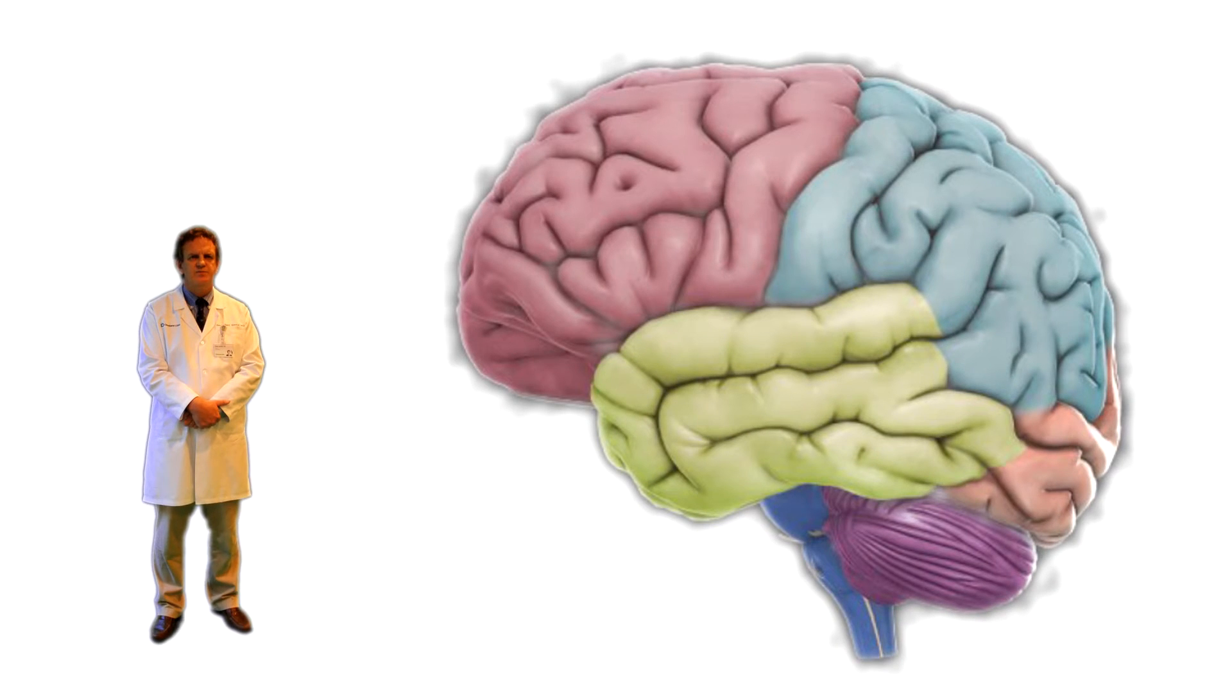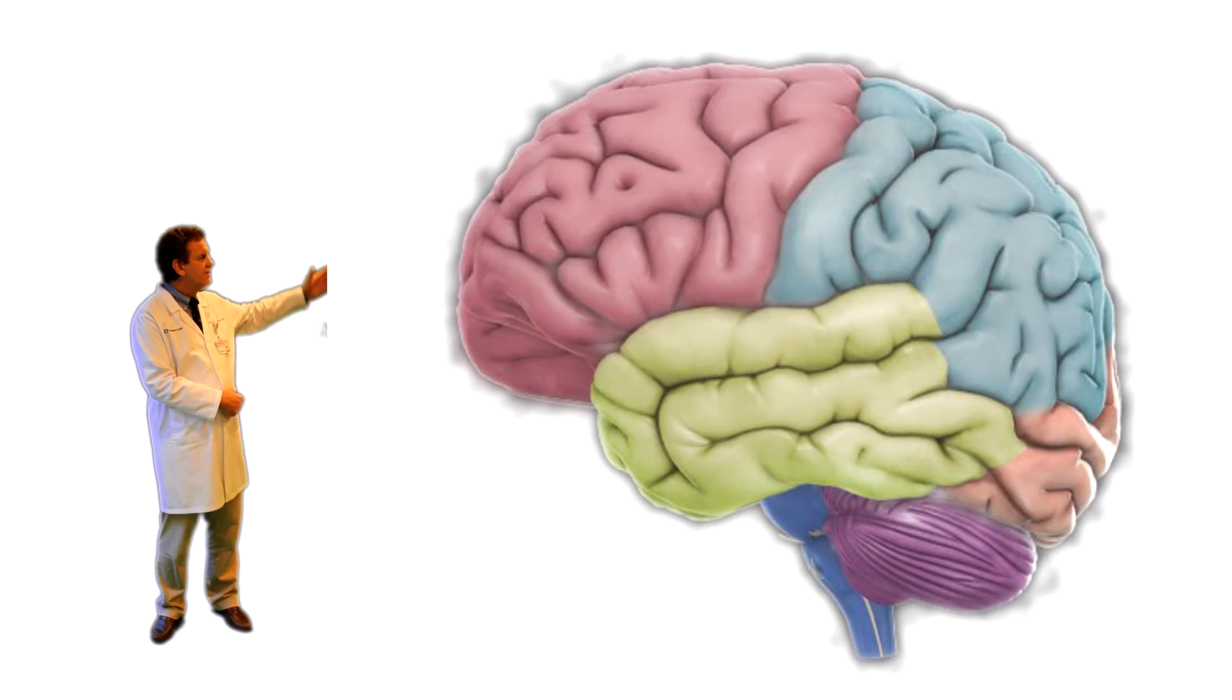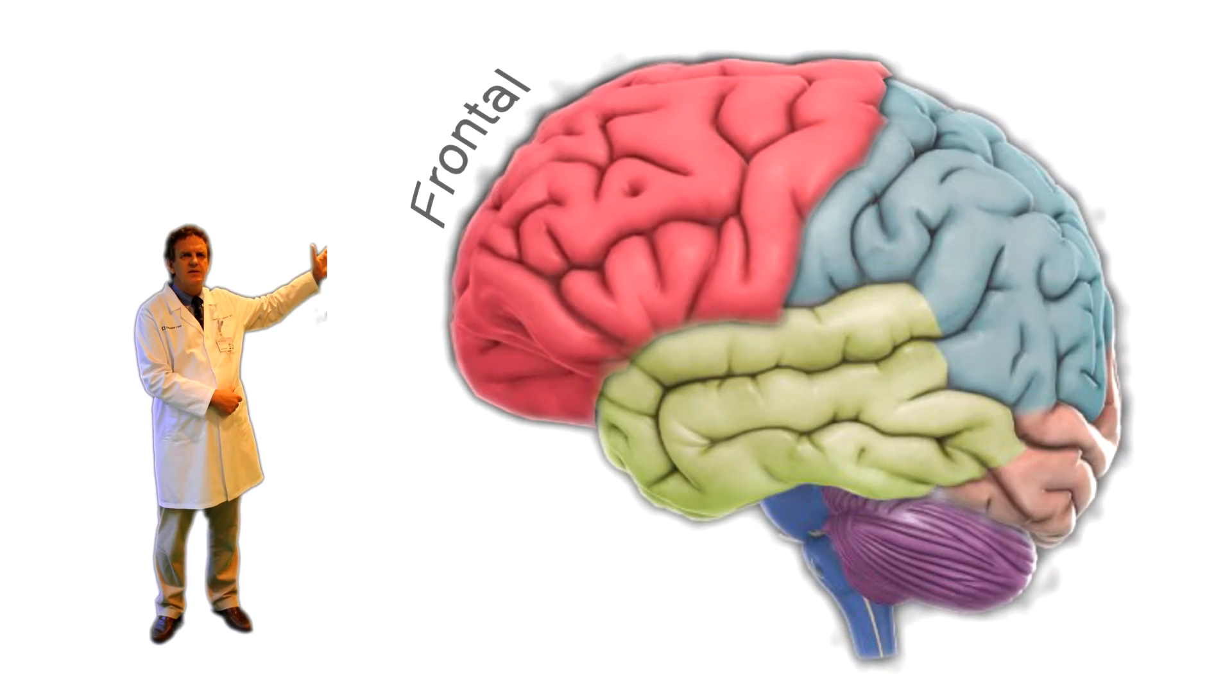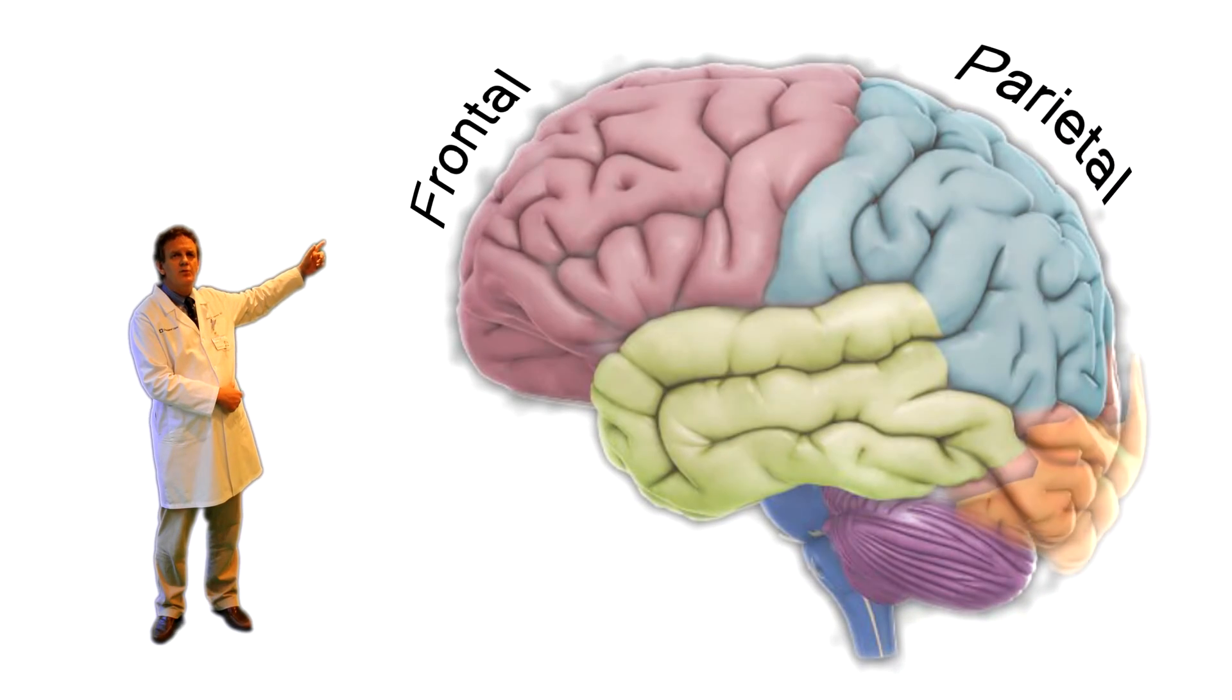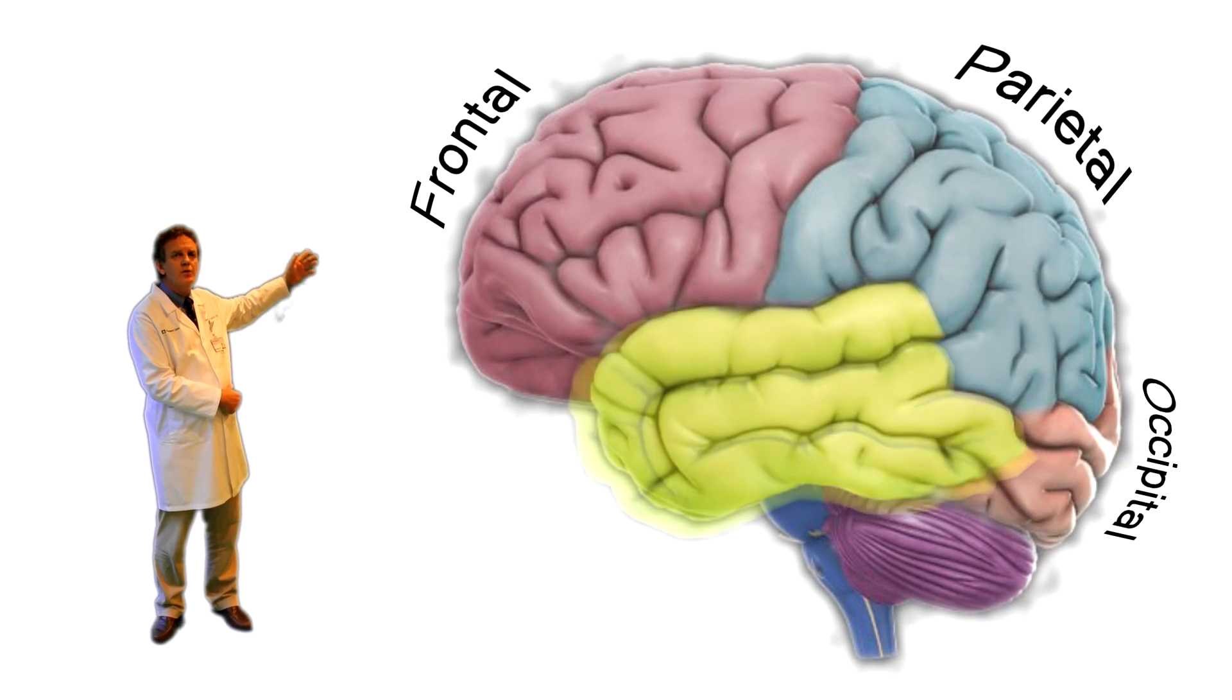The part of the brain that most people instantly recognize, the outer part over here, is actually made of four linked yet separate lobes: the frontal lobe, the parietal lobe, the occipital lobe, and the temporal lobe.